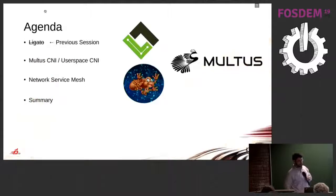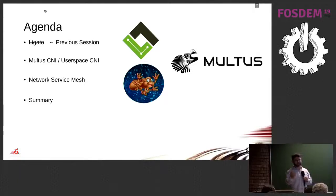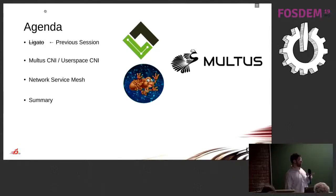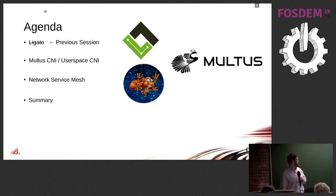Luckily I saw that before my talk there was a 40-minute talk on Ligato and Contiv-VPP, because I would not have been able to do justice to that project as well as they did. So I decided not to add that to my discussion. I'm going to talk about User Space CNI and, in conjunction, Multus. Both were upstreamed by Intel and I've been working on the User Space CNI portion. I'll also talk a little bit about Network Service Mesh.